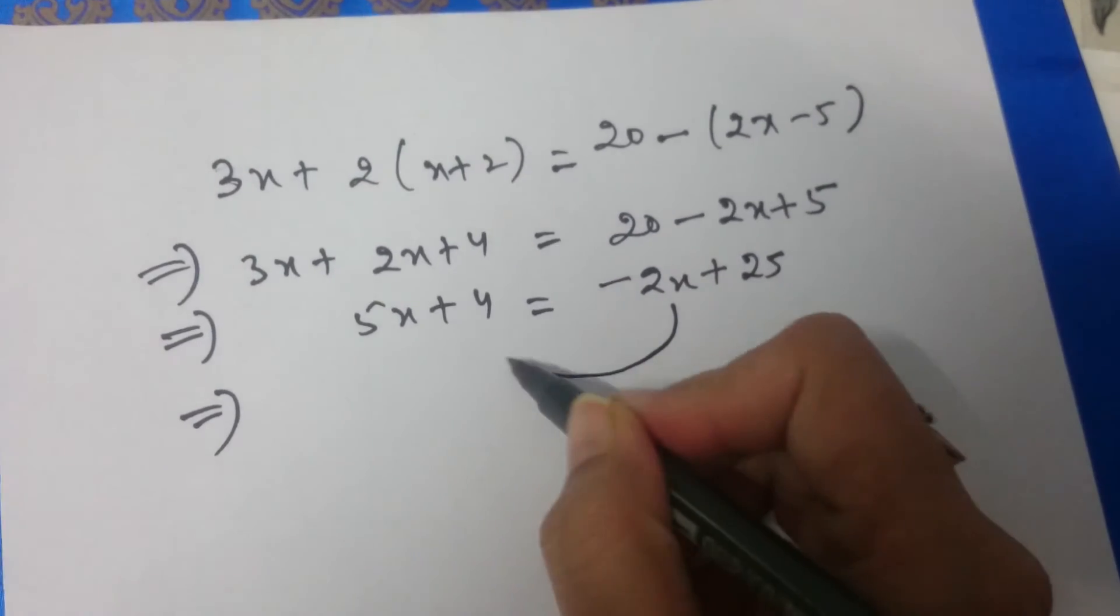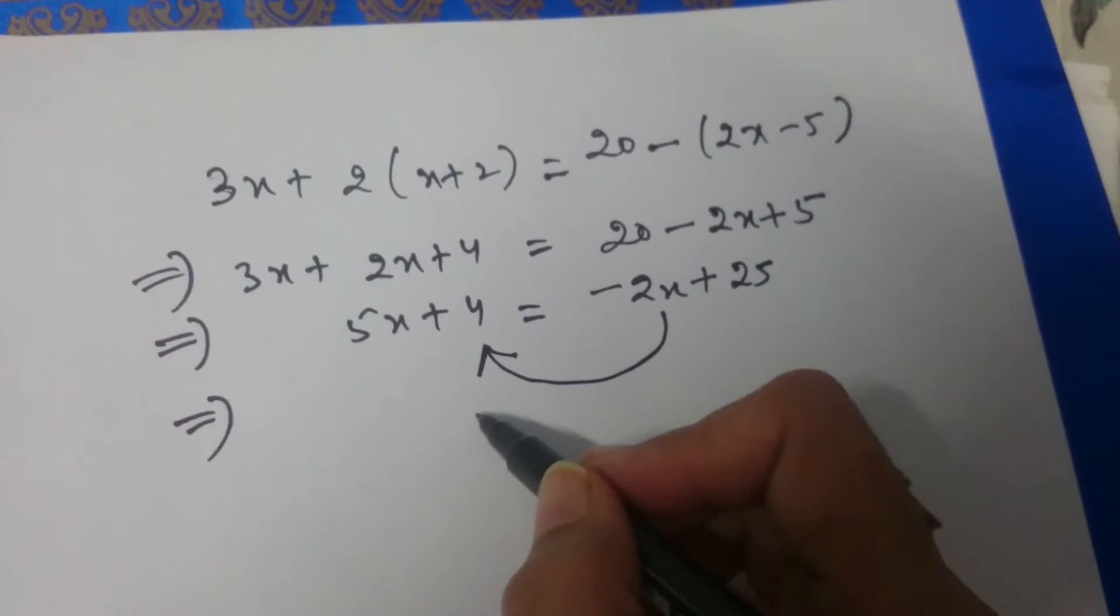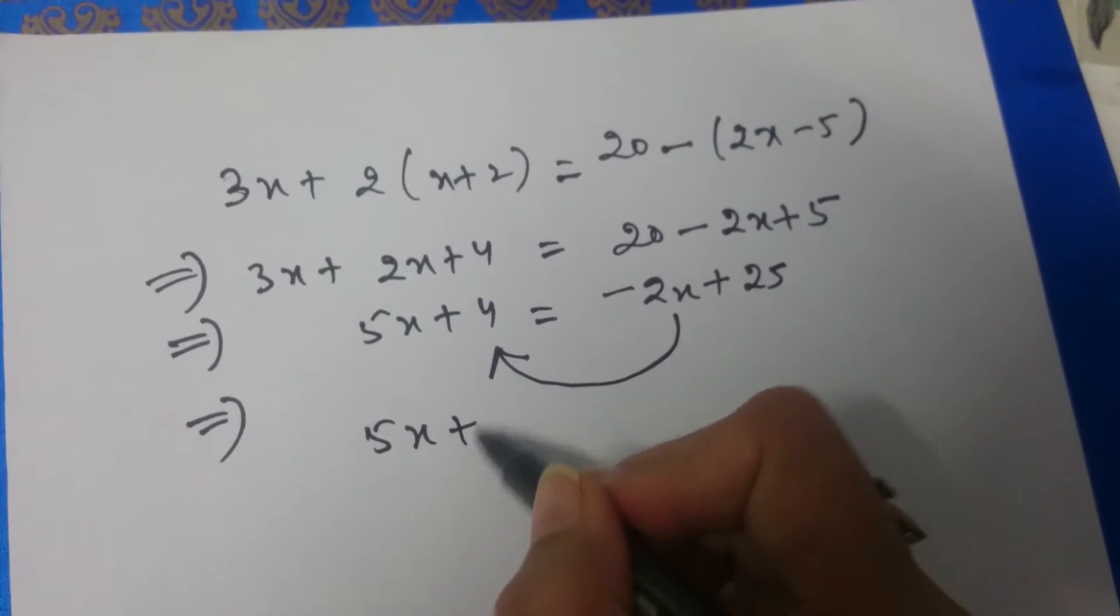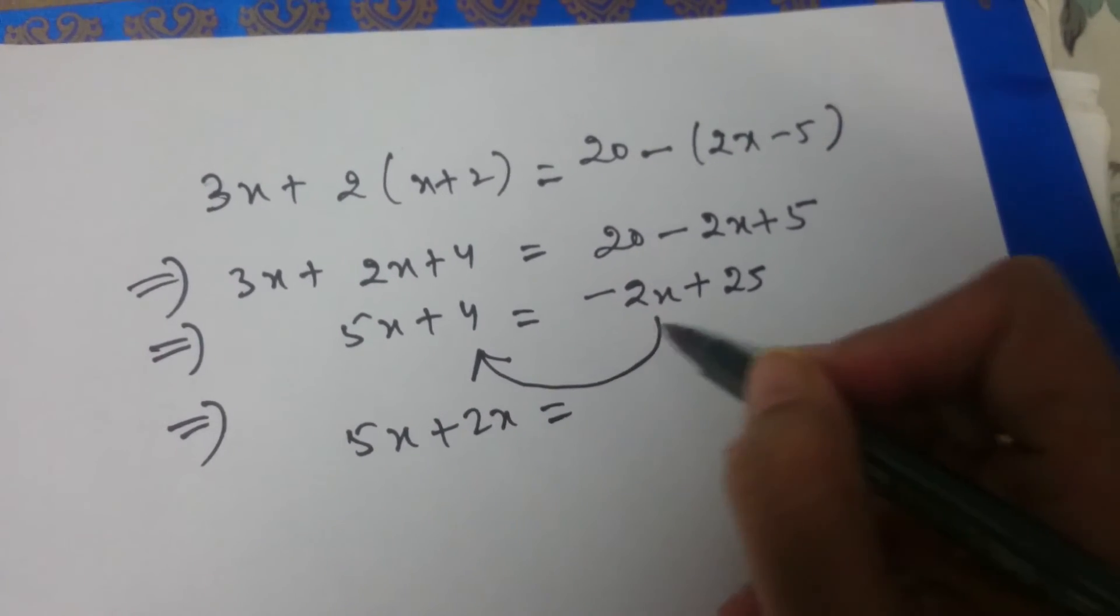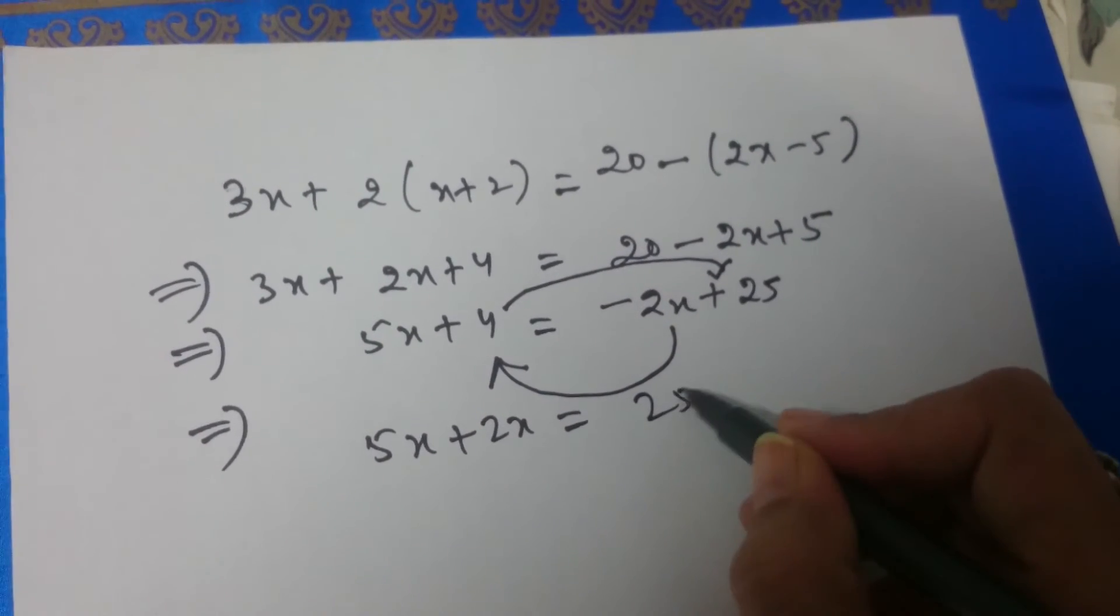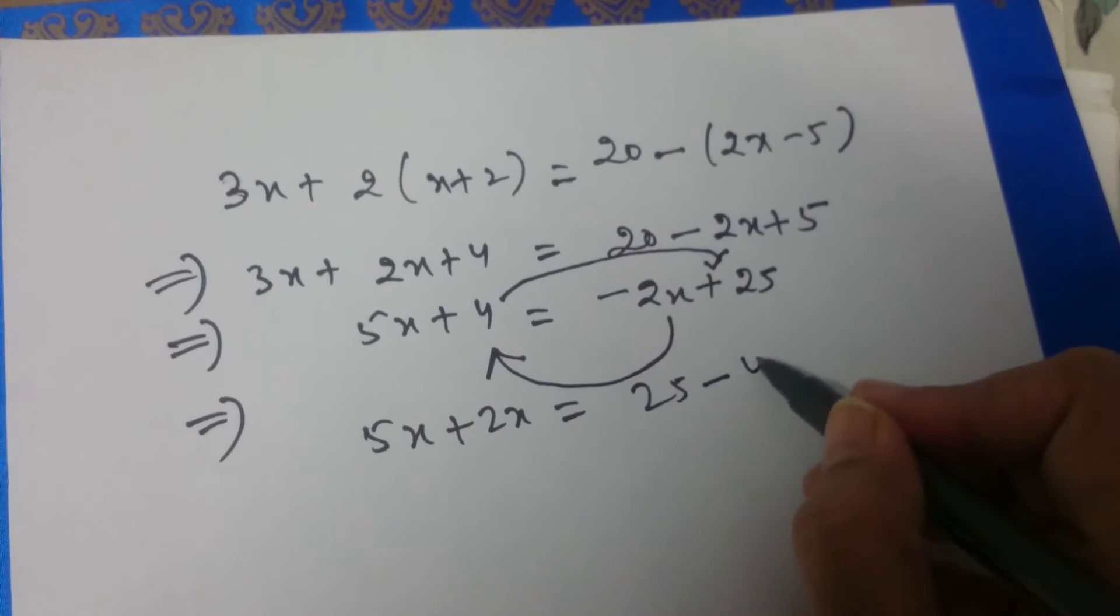Now, we will transpose minus 2x to the other side. So, we have 5x plus 2x is equal to, and we will transpose plus 4 to the right hand side. So, it becomes 25 minus 4.